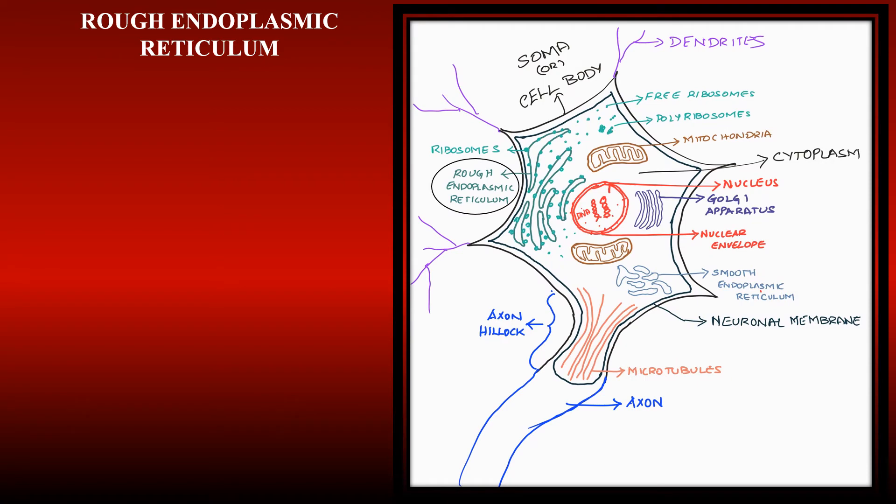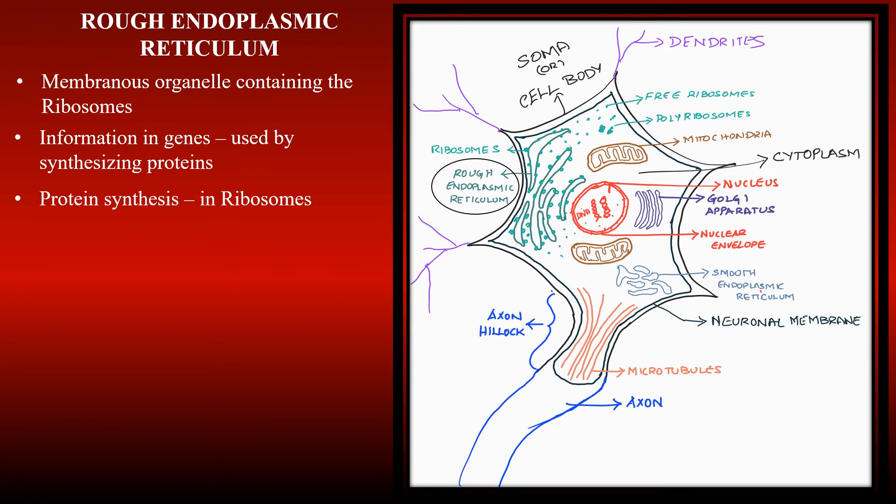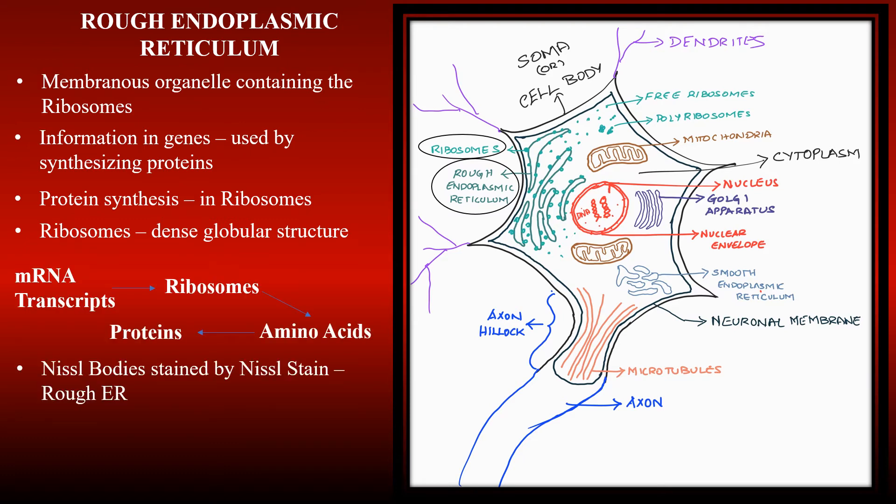Neurons make use of information in the genes by synthesizing proteins. Protein synthesis takes place in ribosomes. These ribosomes are dense globular structures involved in the translation of mRNA transcripts into proteins. There are numerous ribosomes present in the rough endoplasmic reticulum of the neuron.